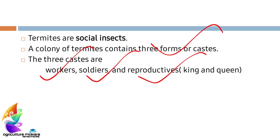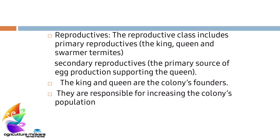The three castes include workers, soldiers, and reproductives. Reproductives refers to the king and the queen. There are two types of reproductives: primary and secondary. The primary reproductives include the king, queen, and swarmers, while the secondary reproductives are the primary source of egg production, supporting the queen.